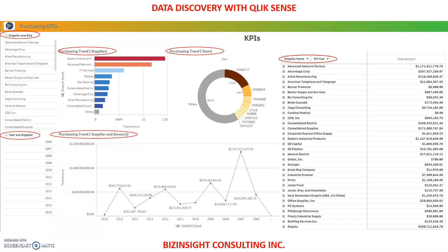We have a line chart at the bottom to show the yearly purchasing trend. As you can see, purchasing spikes in the years 2006, 2007, and 2008, and hit rock bottom in 2014, 2015, and 2016. On the left-hand side, we have data filters for supplier, sites, year, and supplier.